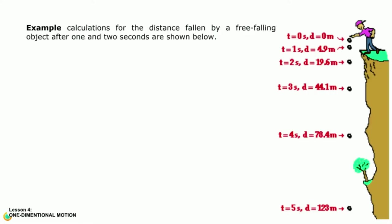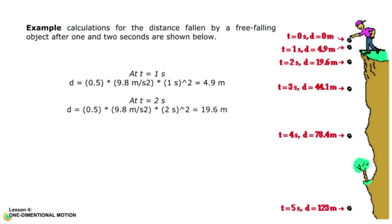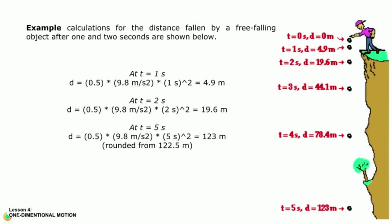Second example: calculations for the distance fallen by a free falling object after 1, 2, and 5 seconds are shown below. At t equals 1 second, d equals 0.5 times 9.8 times 1 squared, giving d equals 4.9 meters. At t equals 2 seconds, d equals 0.5 times 9.8 times 2 squared, giving d equals 19.6 meters. At t equals 5 seconds, d equals 0.5 times 9.8 times 5 squared, giving d equals 122.5 meters.